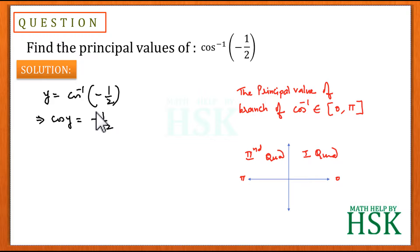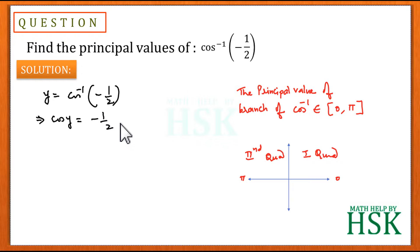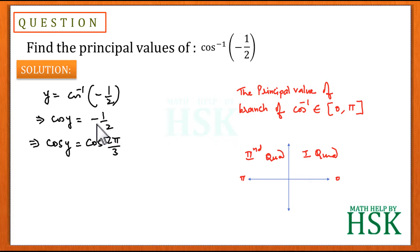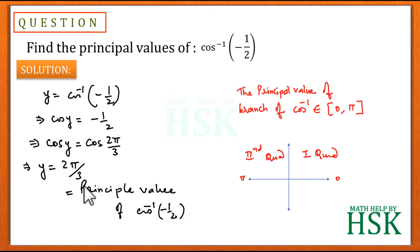From class 11 knowledge, cos of 120 degrees or cos of 2 pi by 3 equals minus 1 by 2. Since cos of 2 pi by 3 lies in the second quadrant and equals minus 1 by 2, we write cos y equals cos of 2 pi by 3, giving y equals 2 pi by 3. Hence the principal value of cos inverse of minus 1 by 2 is equal to 2 pi by 3, which is the required answer.